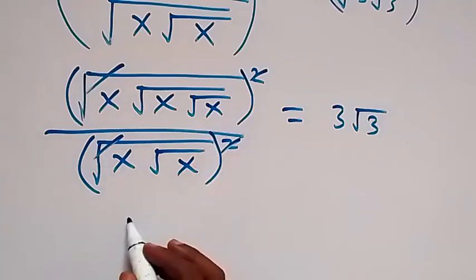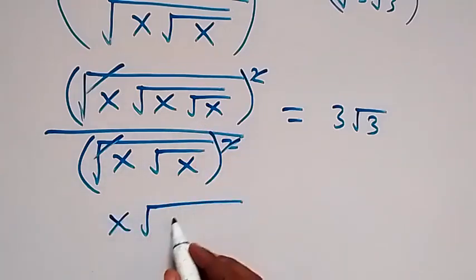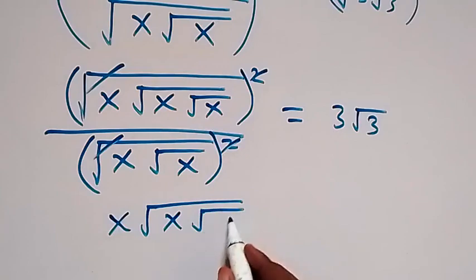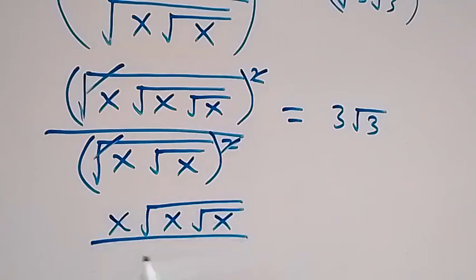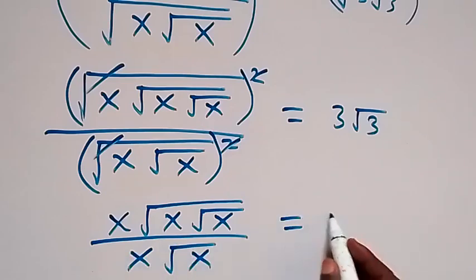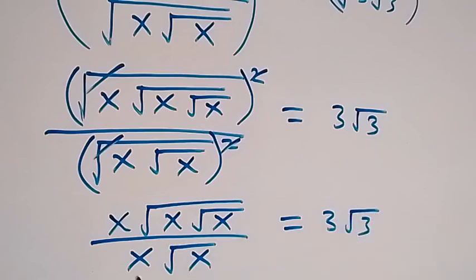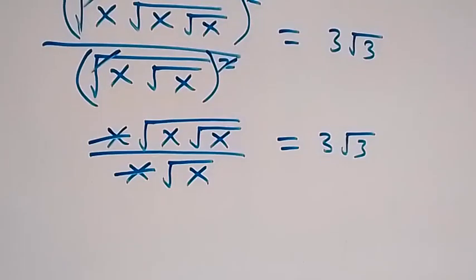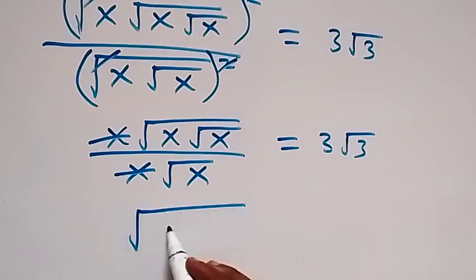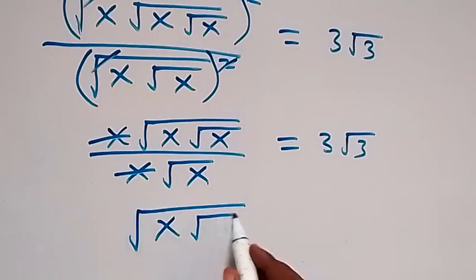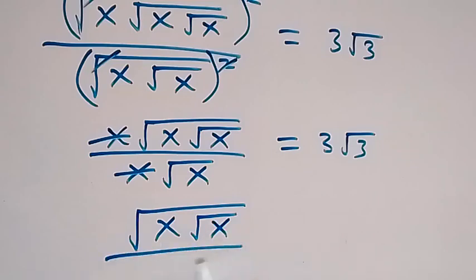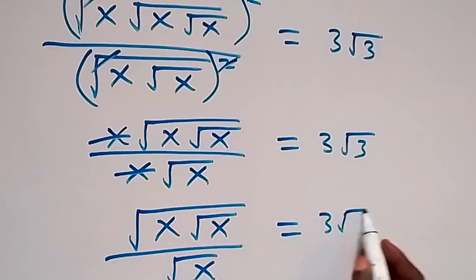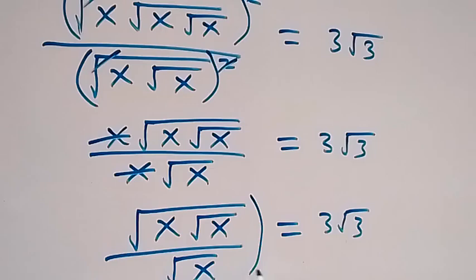What we have left up in the numerator is x times root x times root x, then divided by x times root x. This equals 3 root 3. Here x cancels out, and we are left with square root of x times square root of x over root x, which equals 3 root 3.